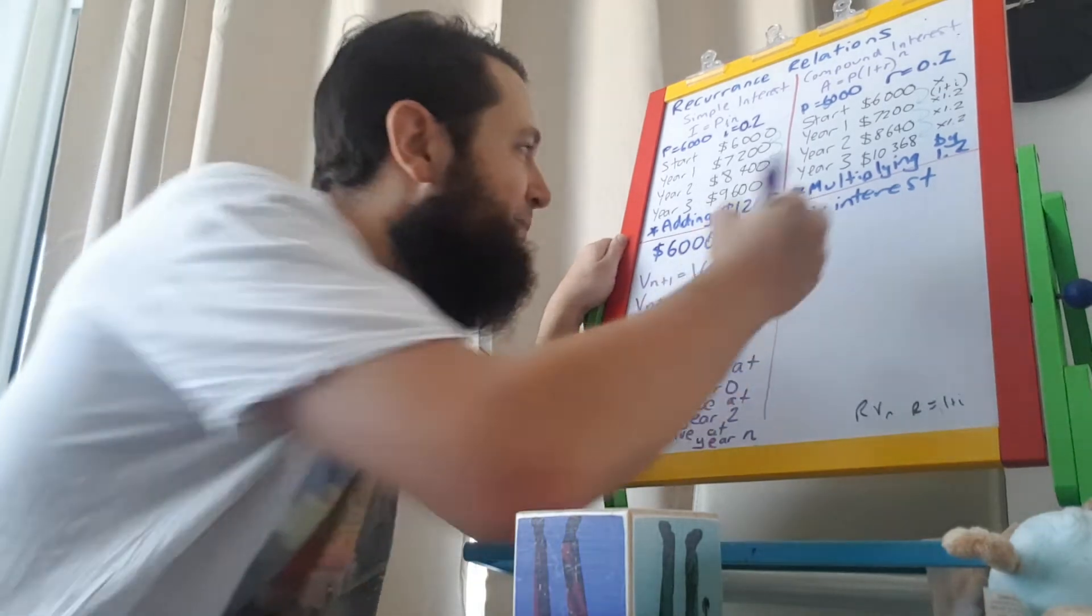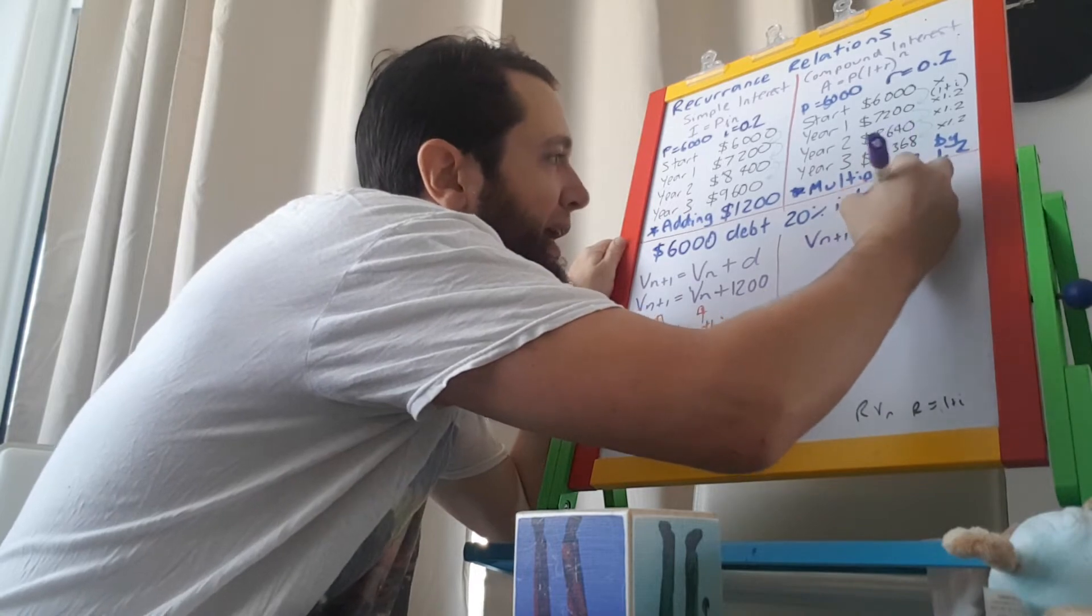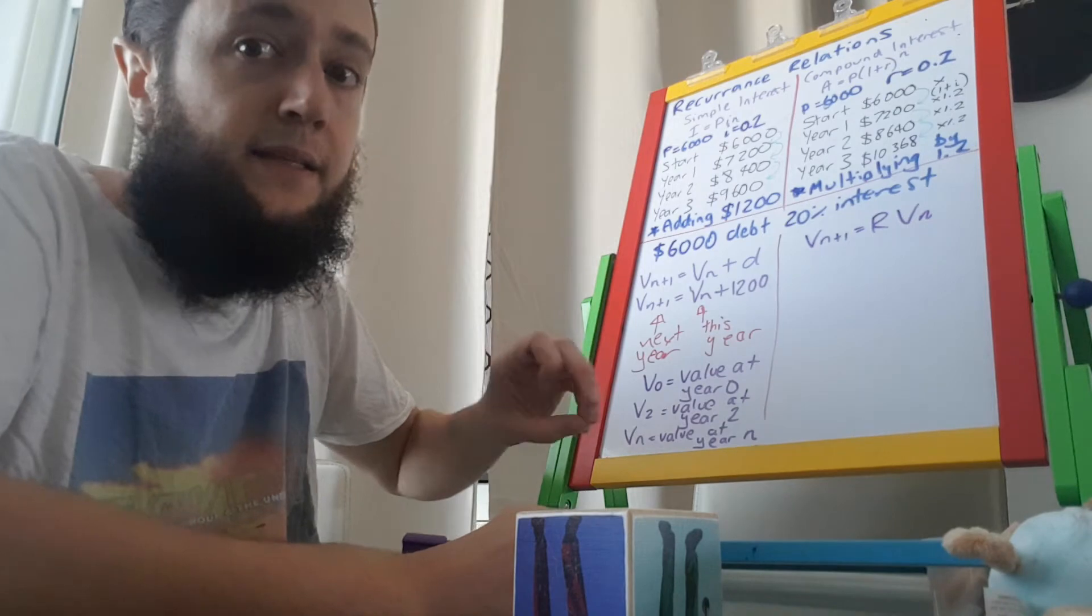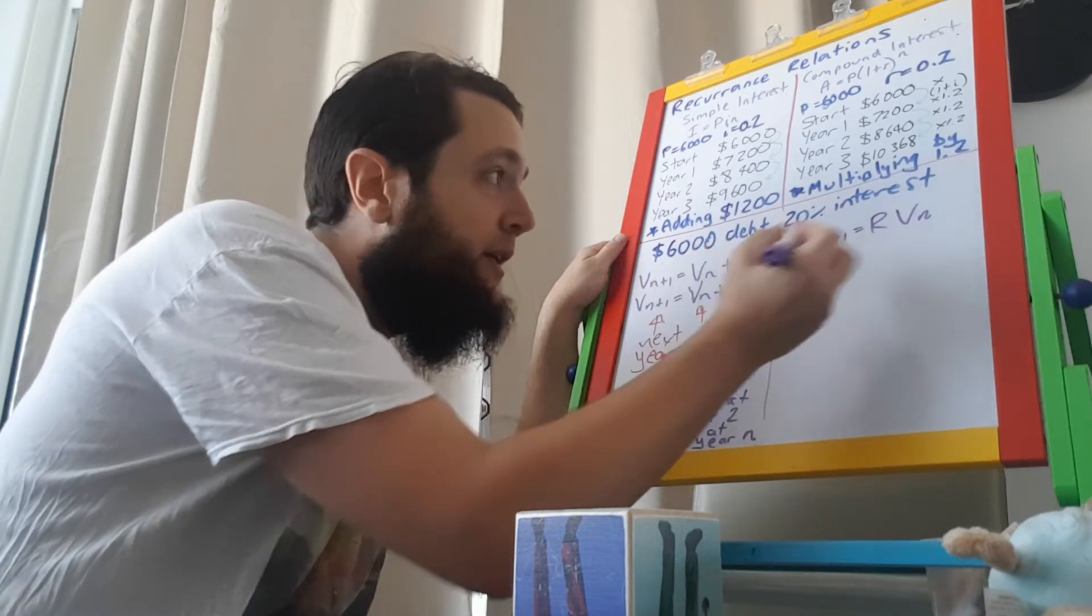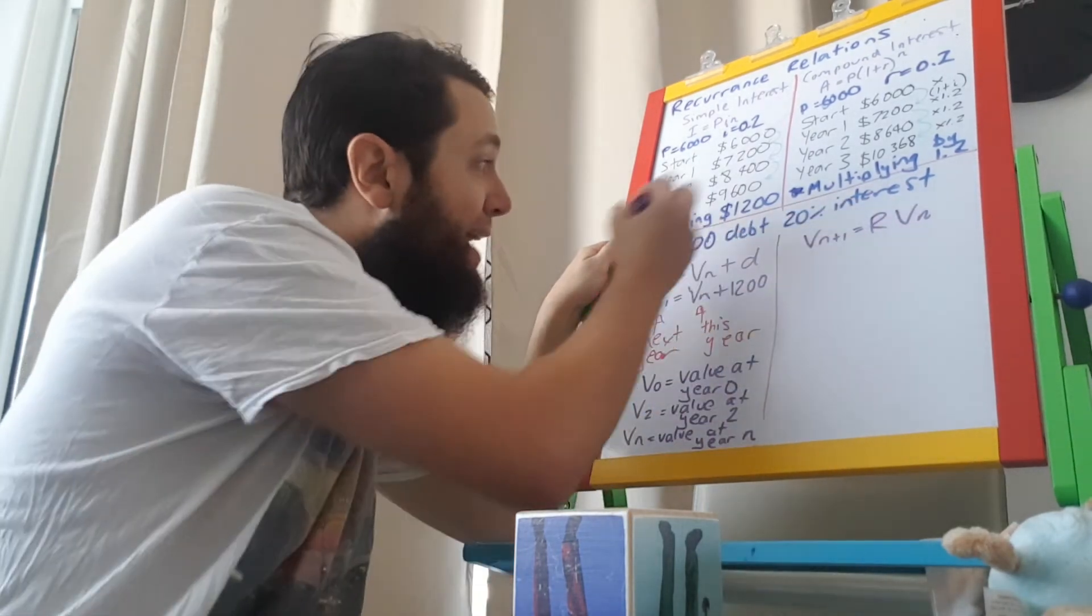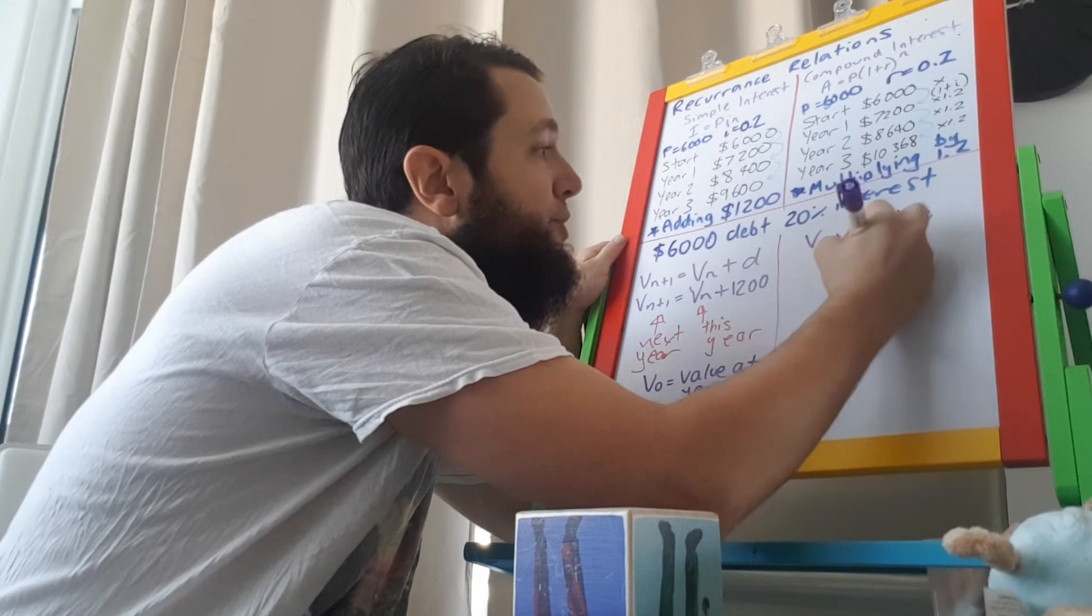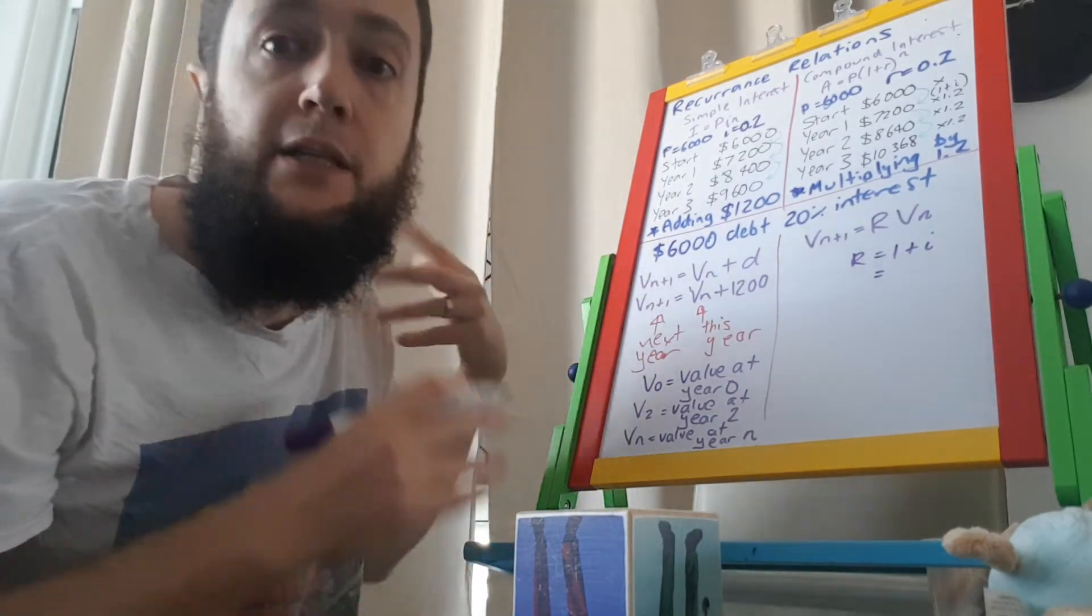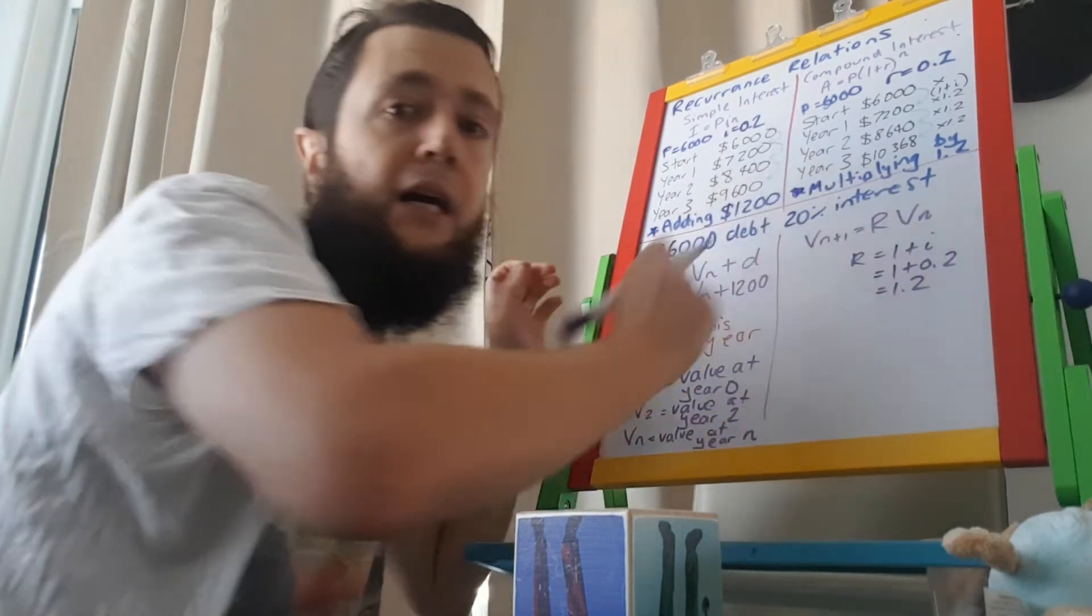Now, here, on compound interest, the formula was a little different. It looked like this. Vn plus one equals Rvn. Again, that means the value next year. That means the value this year. But as discussed, in simple interest, we add to get one year from, get the next year. While with compound interest, we multiply, right? Add for simple interest, multiply for compound interest. Now, this R here happens to be one plus the interest rate. As we discussed in our case above here, the interest rate was 20%, which is 0.2. So R is 1.2.